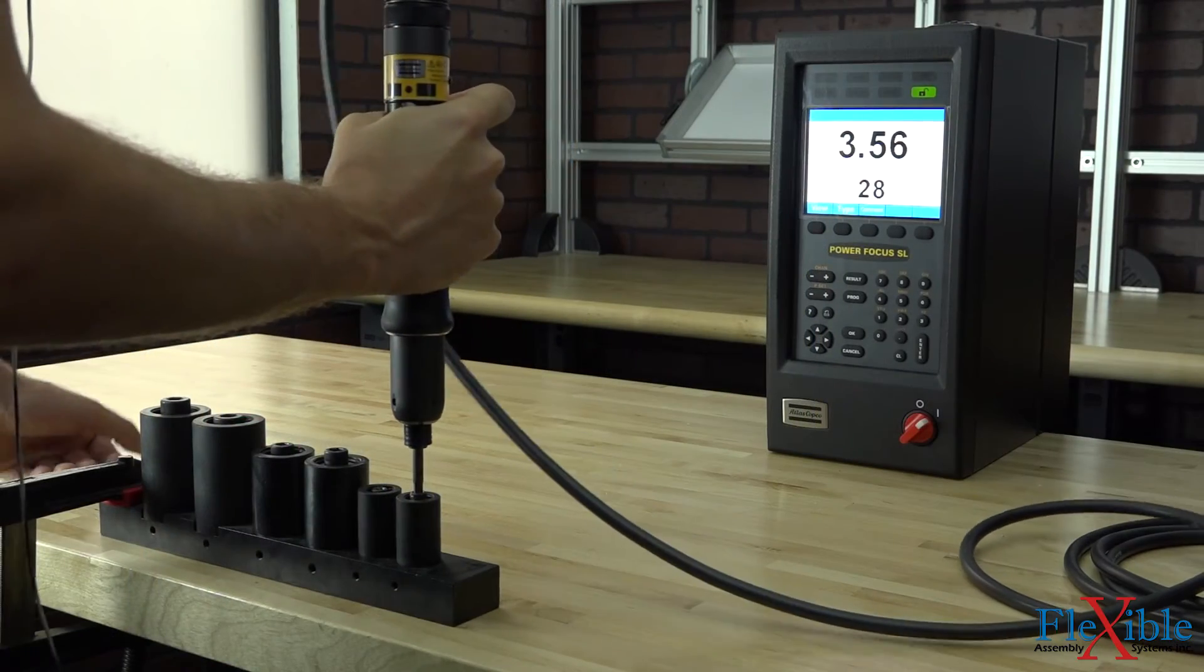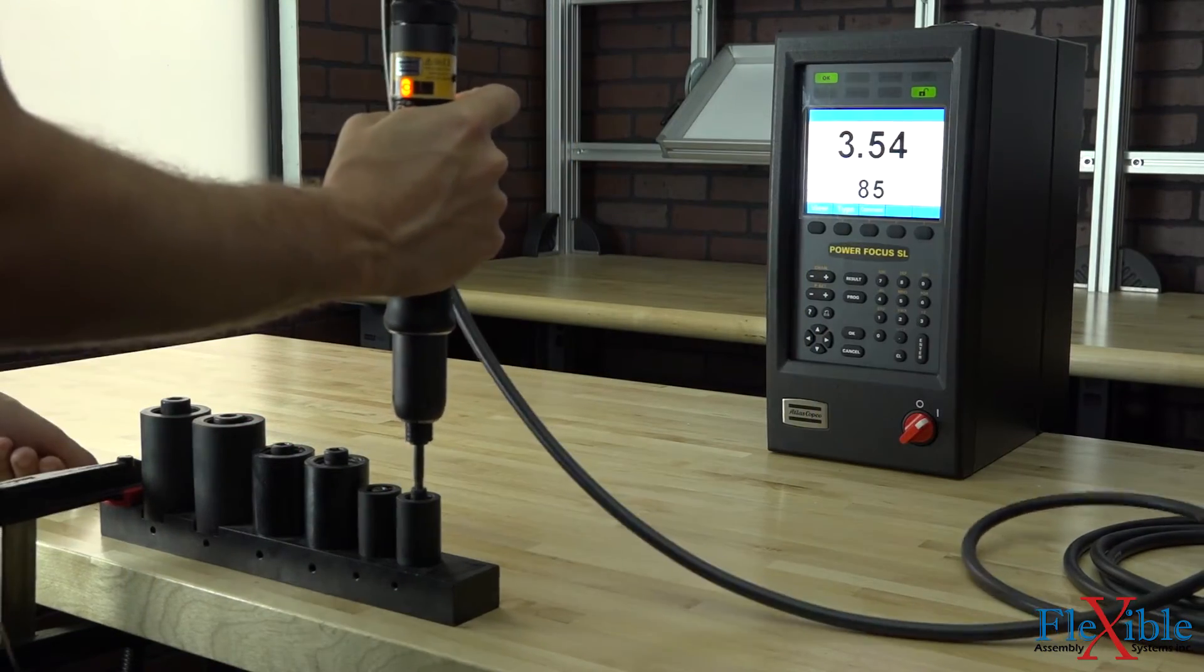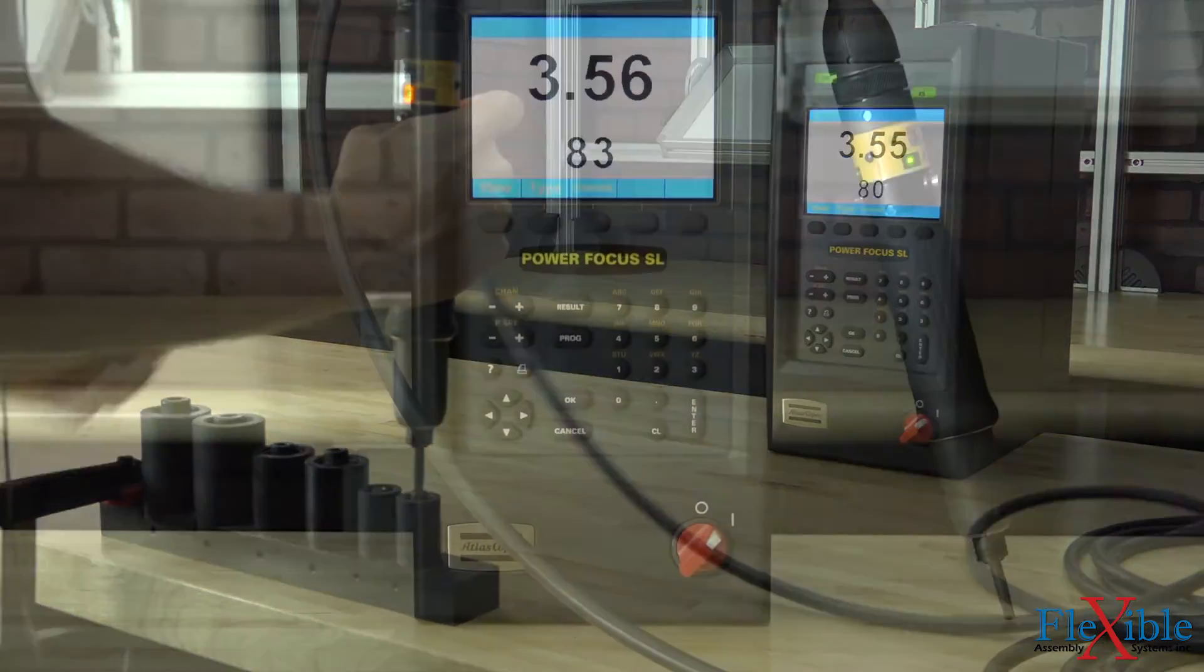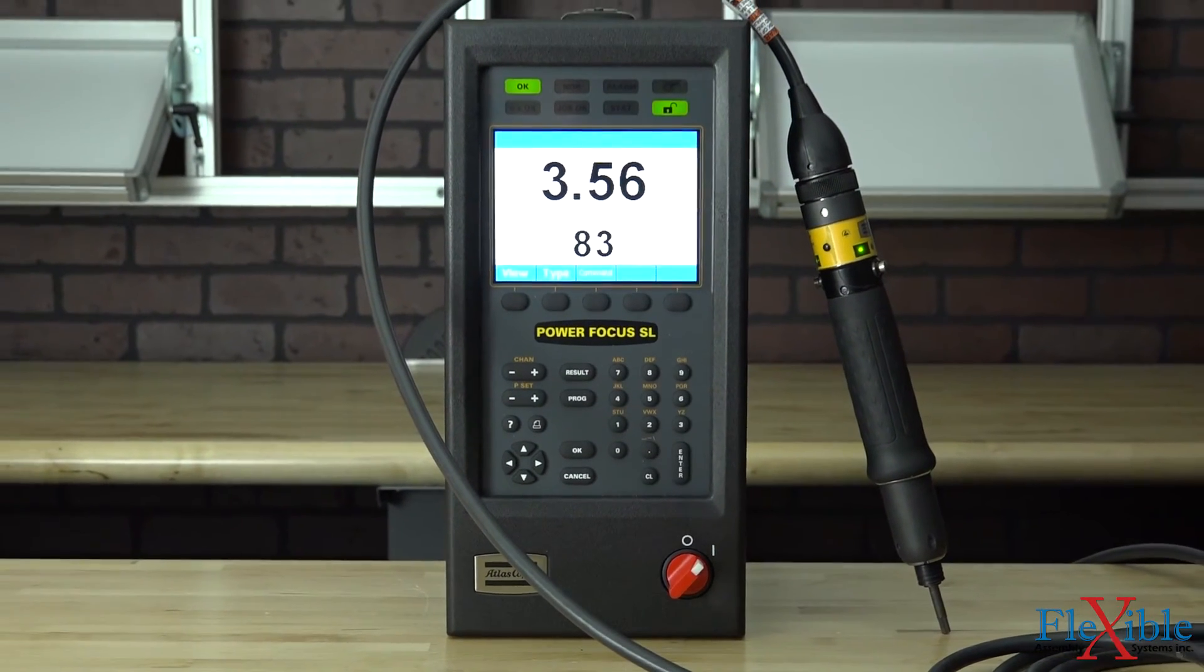For any low torque job where accuracy and traceability is important, the Tensor SL tools work wonders. Their compact design allows them to go where many other tools can't. Perfect for assembly and automotive applications.